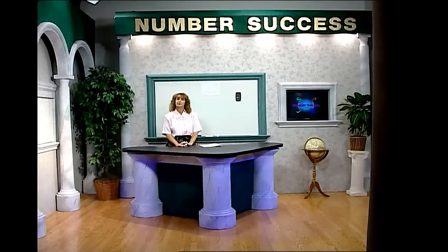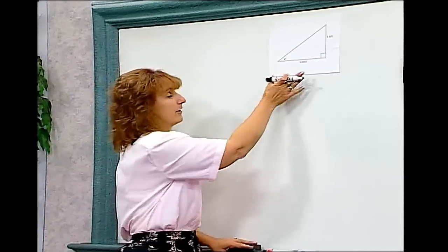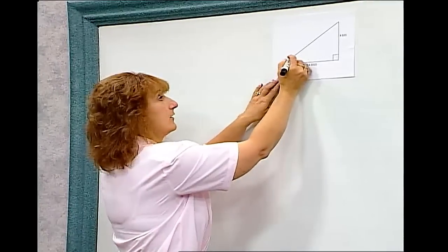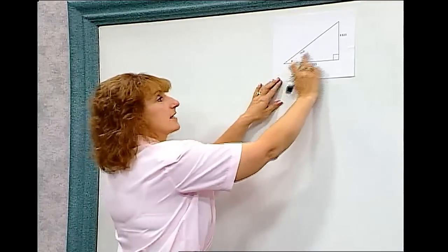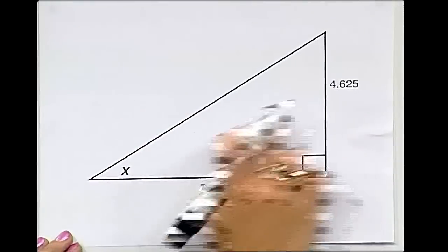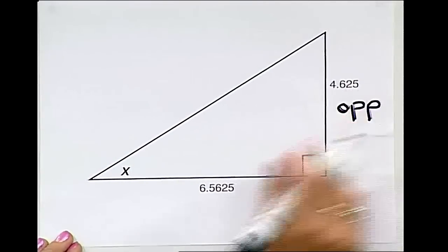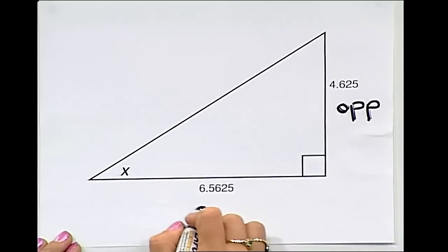Using a calculator to find unknown angles. We have an example here of a right triangle where we are missing this angle. This side is opposite the angle, I'm going to label it opposite. This side is adjacent to the angle.